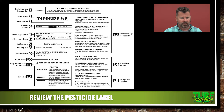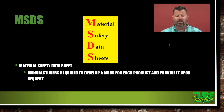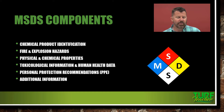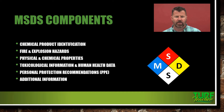Material safety data sheets: manufacturers are required to develop an MSDS sheet for each product and provide it upon request. Your dealer is not necessarily going to give it to you, but most of this stuff you can find online — so print it off and stick it in that notebook. The components include: chemical product identification, fire and explosive hazards (discussed on page 65), physical and chemical properties of the pesticide, toxicological information and human health data, recommended PPE, and any additional information. Read the bullets on pages 65-66 that discuss the components of the MSDS sheet.